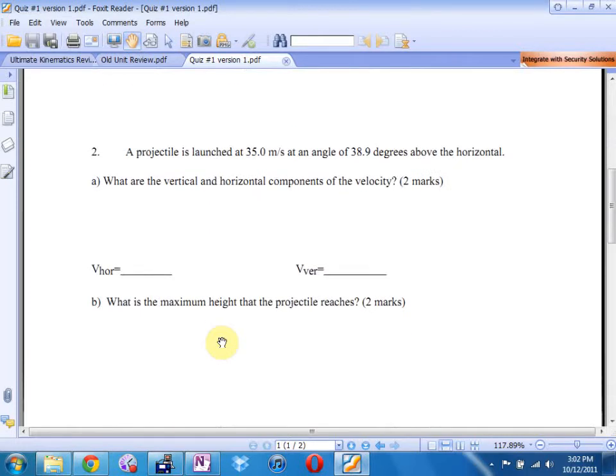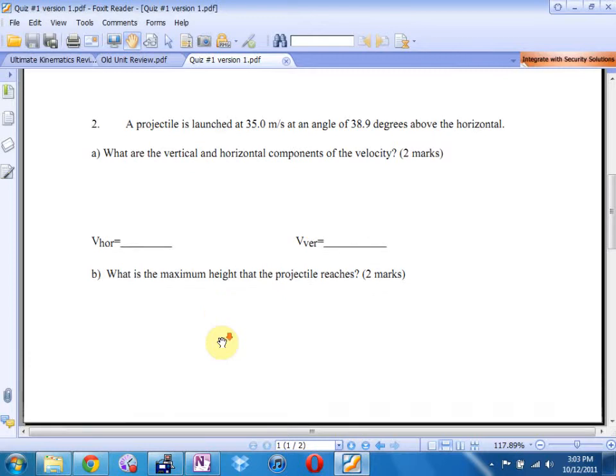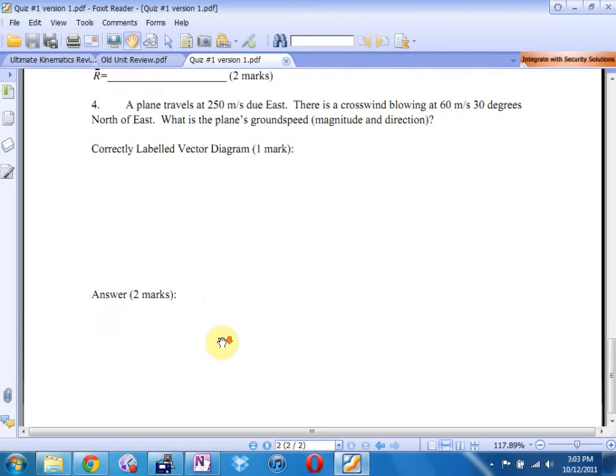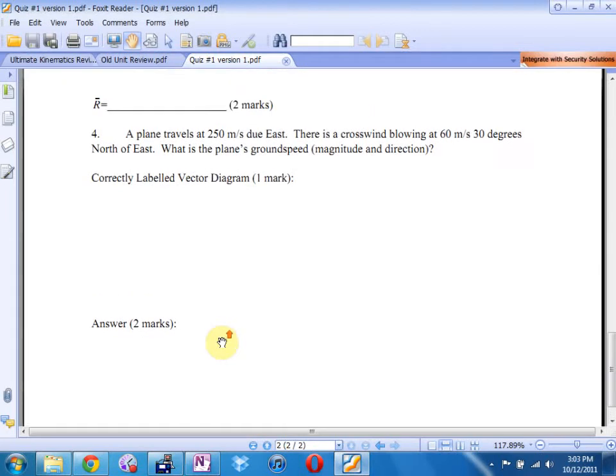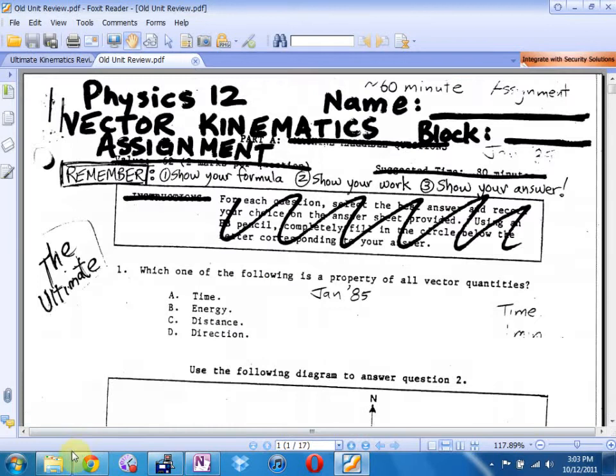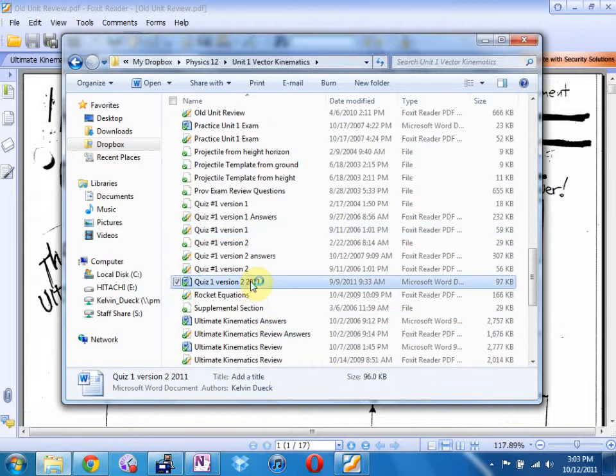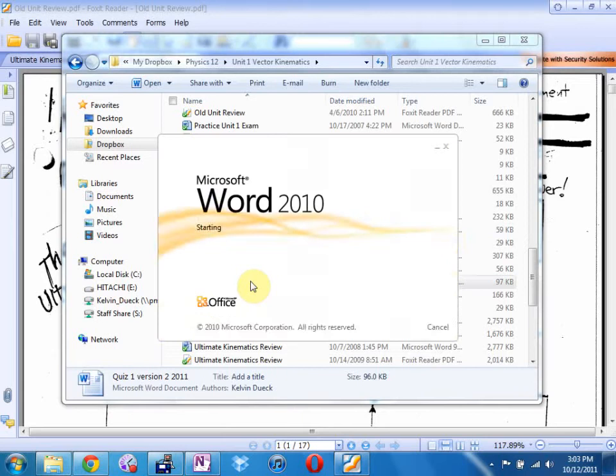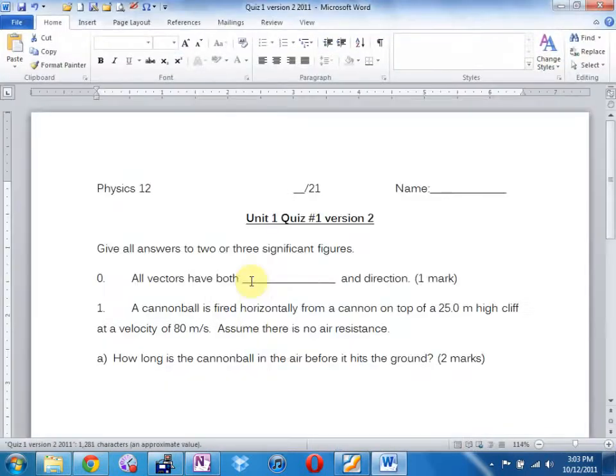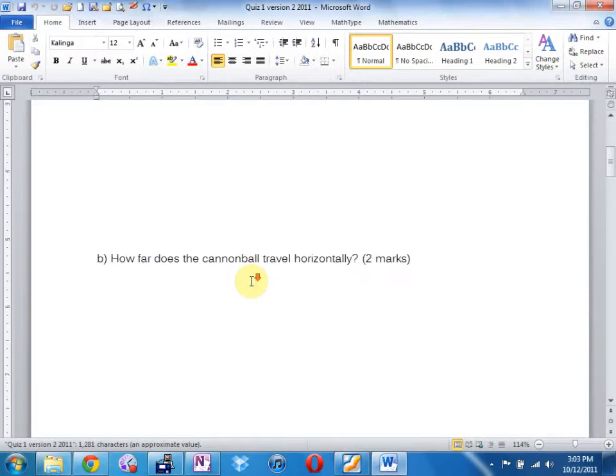If you are comfortable with number two, which is at an angle but starting on the ground, key ideas are at the top, at maximum, your Vy is zero. You also know coming back down, your Vy final is the same as your Vy initial, but negative. If you were okay with the airplane with the crosswind, and I gave you a different version of the quiz. If you're okay with those, you're good for about 80% of what's going on.